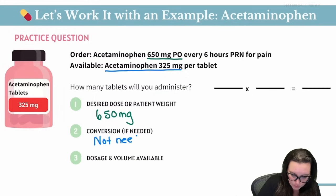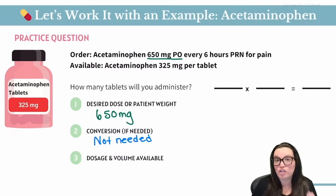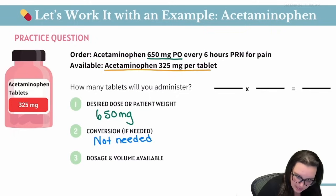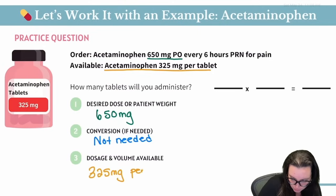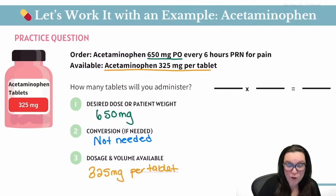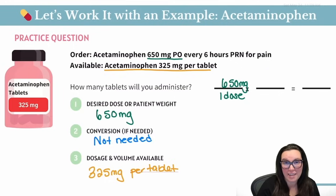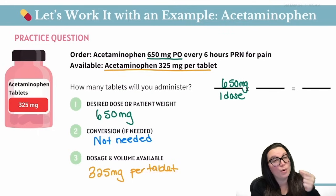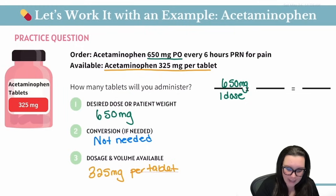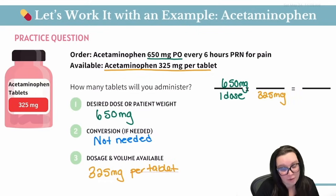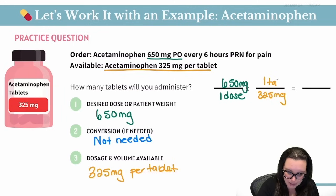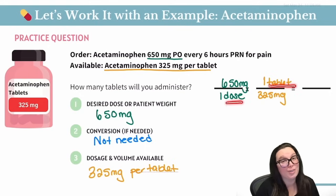There are no conversions needed. Our dosage and volume available: 325 milligrams per tablet. So plugging it in — our first fraction is 650 milligrams for one dose. We skip the conversion step and move to dosage and volume. We want to cancel out milligrams, so we put 325 milligrams on the bottom of our fraction and our volume, one tablet, on the top. That way, when we cancel out our milligrams, the only thing left is how many tablets per dose we're going to give.